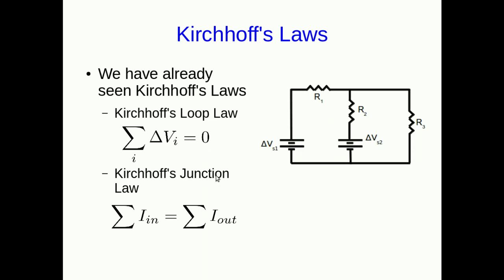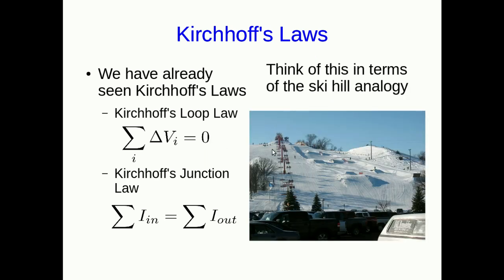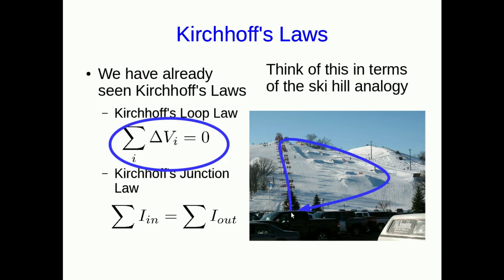The other is Kirchhoff's junction law. Again, we've already seen this — it's simply a statement of conservation of charge. If current flows into a junction, the amount of current flowing out must be the same, because you can't have charge building up in the junction, and you can't destroy or create charge. Think in terms of the ski hill analogy: the loop law is saying that if you start at the bottom of the hill and go up the chairlift, you will have to come back down a distance equal to how far you went up, so the sum of all height differences adds up to zero.